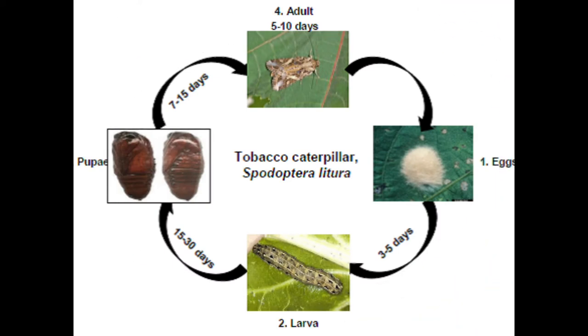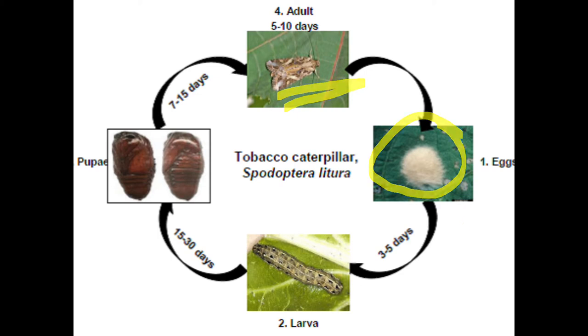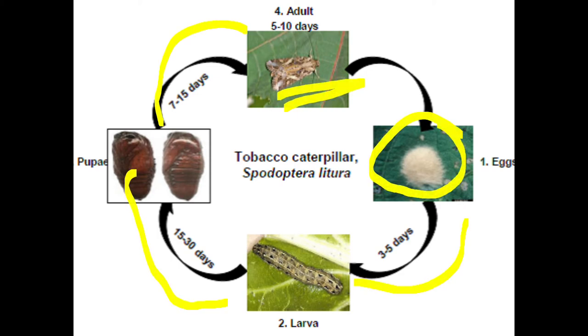Here is a tobacco caterpillar adult. These are the egg stage, followed by the larval stage, then the pupal stage, and finally the adult stage. This is the tobacco caterpillar life cycle.